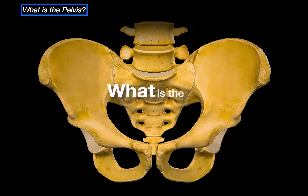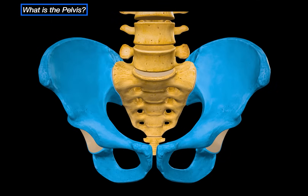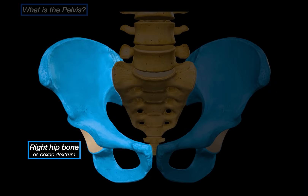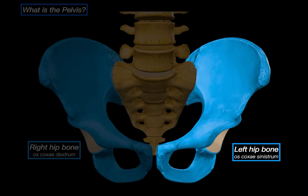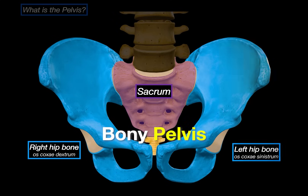So what is the pelvis? Think of the pelvis as the central bridge between the spine and the lower limbs. Anatomically, the pelvis consists of three bones: the right hip bone, the left hip bone, and the sacrum. Together, these three form the bony pelvis.